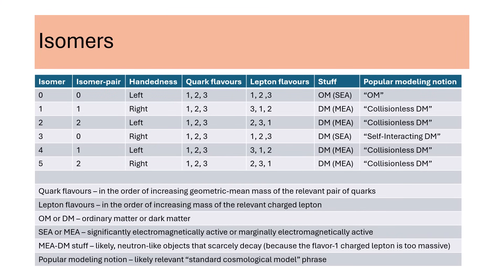The notion that isomer-3 elementary particles differ from isomer-1 elementary particles only with respect to handedness suggests that isomer-3 elementary particles form hydrogen-like atoms. We suggest the term 'significantly electromagnetically active' to describe isomer-0 stuff and isomer-3 stuff. In terms of popular modeling notions, isomer-3 stuff behaves as self-interacting dark matter. For each of the other four dark matter isomers, the flavor-1 charged lepton mass is more than the gap between the neutron mass and the proton mass. For those four isomers, we suggest that stuff evolves, at the hadron level, into scarcely decaying neutrons. We suggest that popular modeling would associate the term 'collisionless dark matter' with the stuff that associates with those four isomers. We suggest the term 'marginally electromagnetically active' to describe this collisionless dark matter stuff.